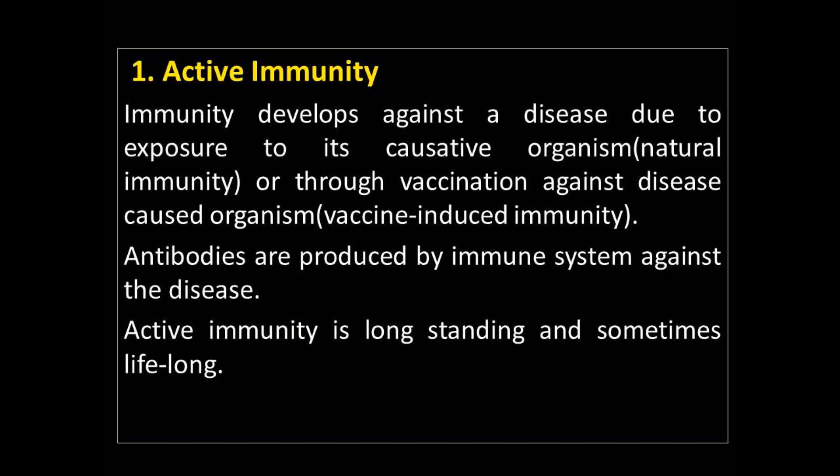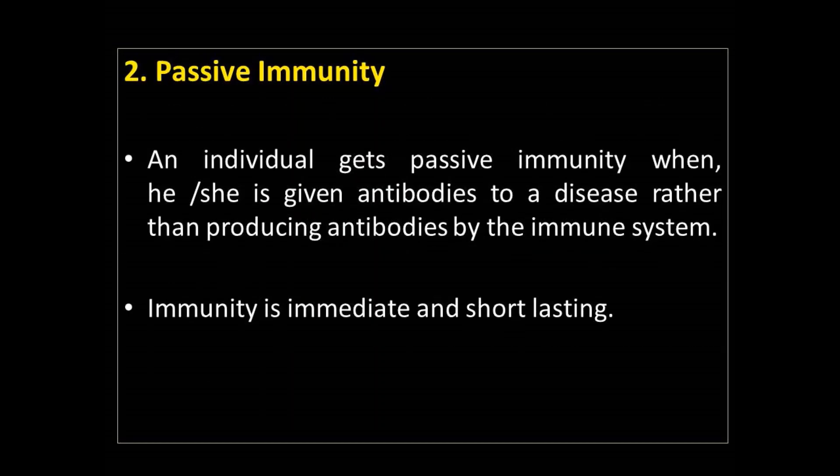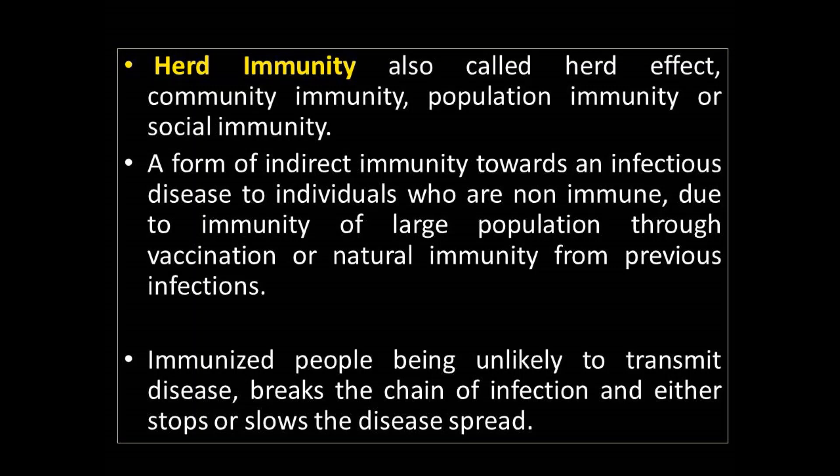Active immunity is long-standing and provides lifelong protection against disease. It can be natural immunity or vaccine-induced immunity. Passive immunity involves administering antibodies to the body. Passive immunity is immediate but short-lasting. Herd immunity is an indirect form of immunity.